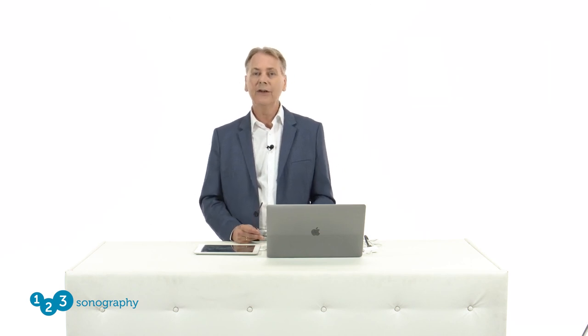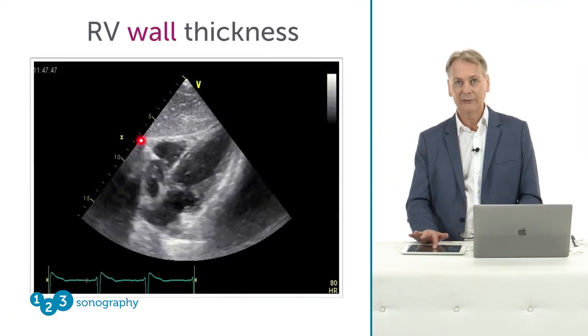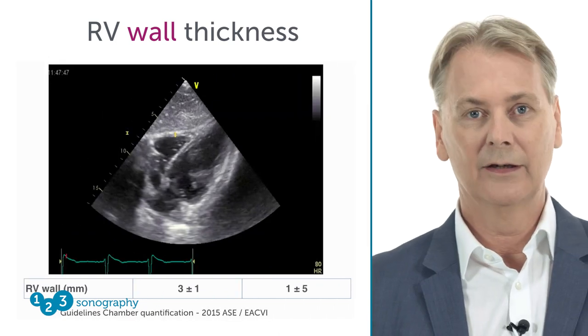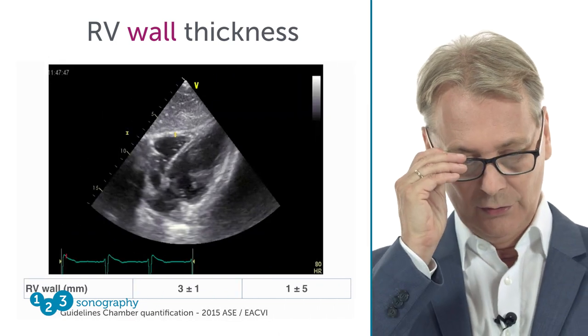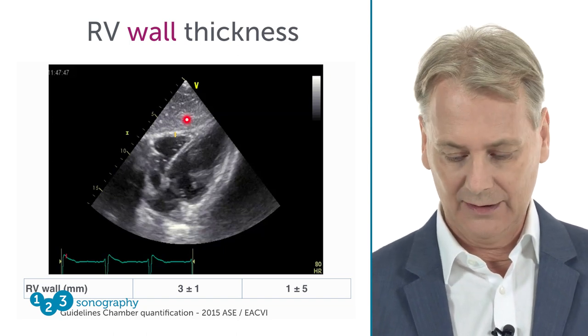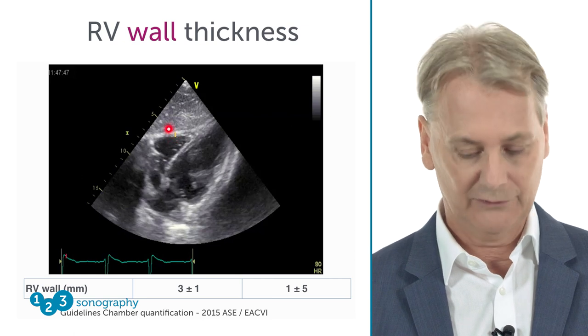Let's turn to another view where you can look at the size of the right ventricle — the right ventricle outflow tract. Here you would perform a parasternal short-axis view at the base and then perform a measurement in this region. Here you have a very nice delineation between the pericardium and the free lateral wall, and this is exactly where we would measure. The normal values are in a range of 1 to 5 millimeters, and basically 3 millimeters is the average thickness of the free right ventricle wall.